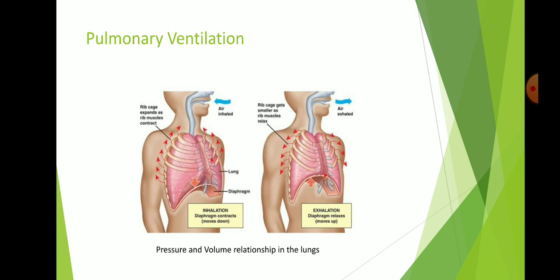When the thoracic cavity enlarges, as shown in the left side figure, the pressure inside the lungs decreases. Air now enters the respiratory passages because the pressure inside the lungs is lower than atmospheric pressure. During breathing, enlargement of the thoracic cavity involves the contraction of the diaphragm — the muscular sheet that separates the thoracic and abdominal pelvic cavities — aided by the external intercostal muscles.